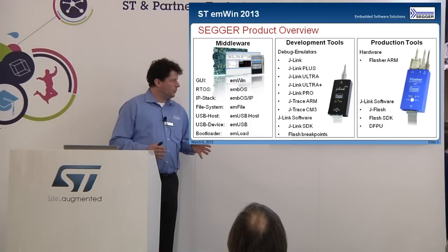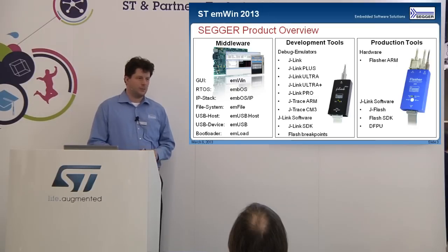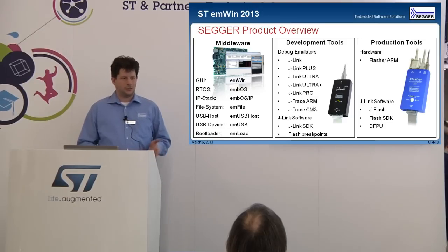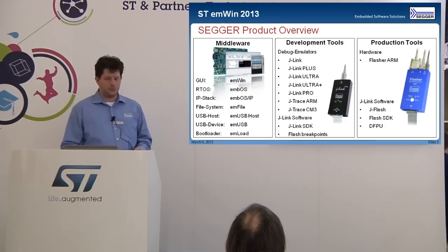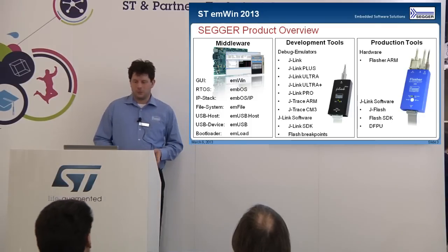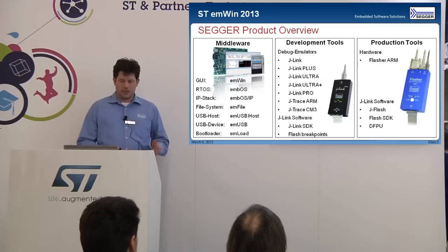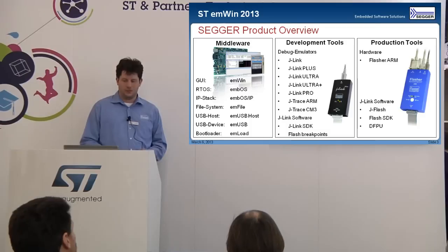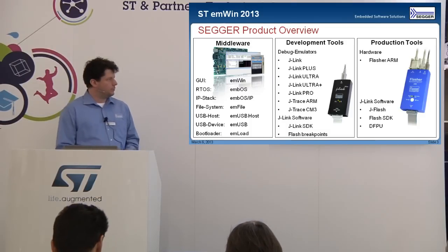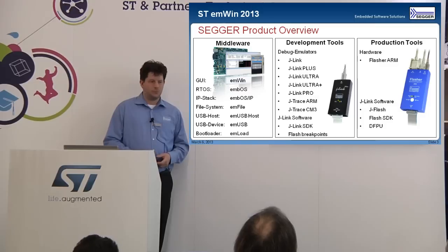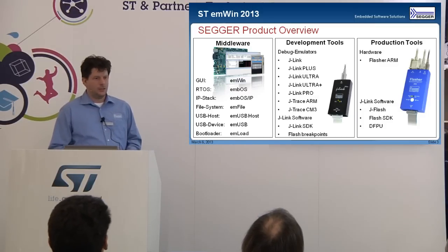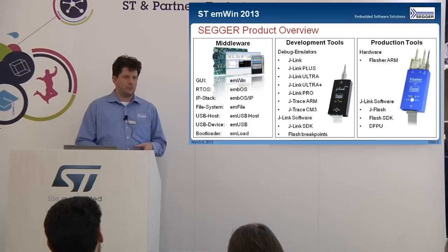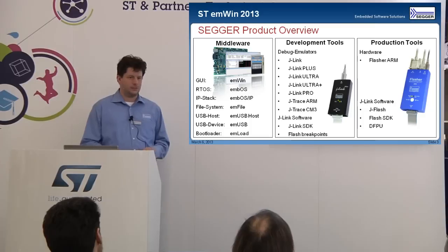To cover this, we have a few types of products. One is the middleware with the RTOS, GUI, file system, IP stack, USB stack, and so on. We have our development tools with J-Link, J-Link Plus, J-Link Ultra, and Ultra Plus — all drop-in replacements with additional features. And the third product type is the production tools, which are based on J-Link technology, capable of integration into different production environments, supporting standalone operation and service environments.